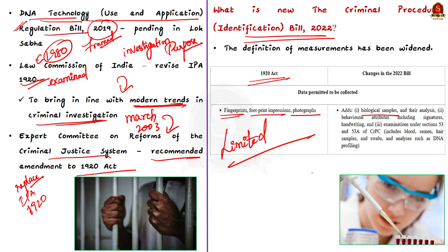The 2022 act includes measurements such as finger impressions, palm prints, footprint impressions, photographs, iris and retina scans, biological samples and their analysis, and behavioural attributes including signatures, handwriting or any other examination referred to in sections 53 or 53A of the Code of Criminal Procedure 1973, that is CrPC 1973.